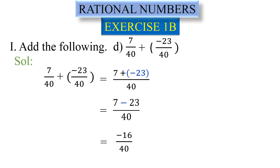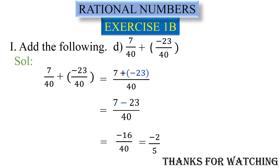Now simplify minus 16 by 40 — cancel numerator and denominator. Dividing both by 8: 2 eights are 16, 5 eights are 40. So the answer is minus 2 by 5. Thank you.